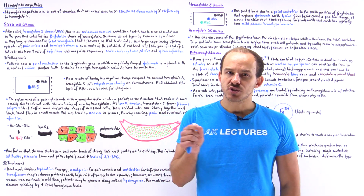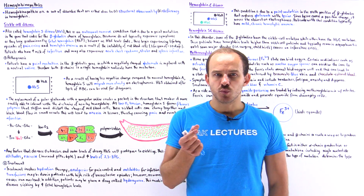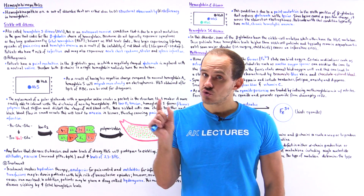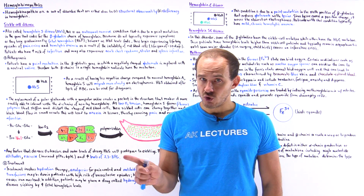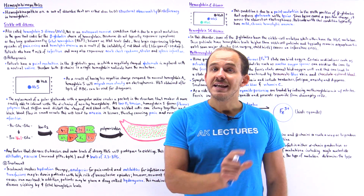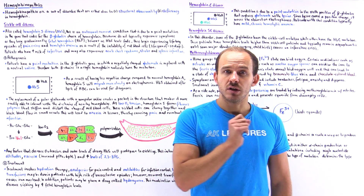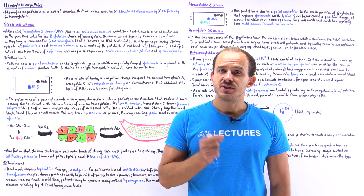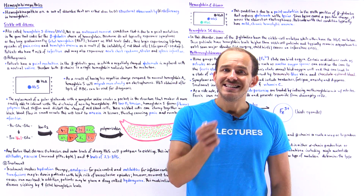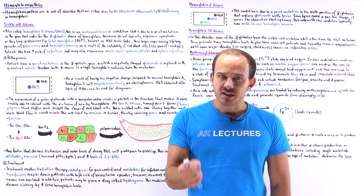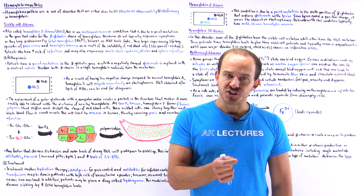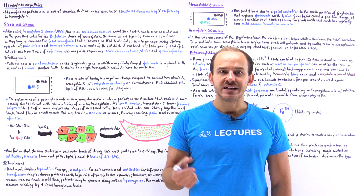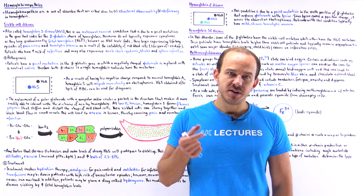Hemoglobinopathies are a set of disorders in which we have a defect either in the structure of hemoglobin or in the production of hemoglobin. Either way, hemoglobinopathies cause a set of clinical symptoms and findings that are specific to that particular hemoglobinopathy.